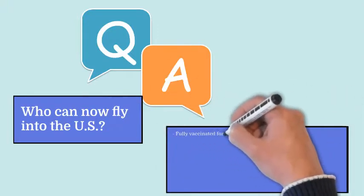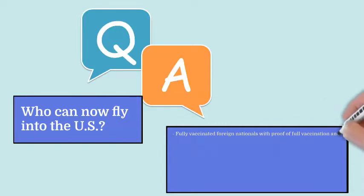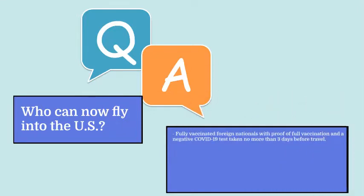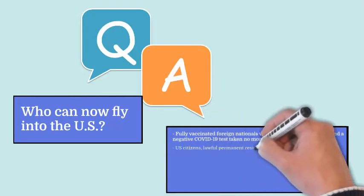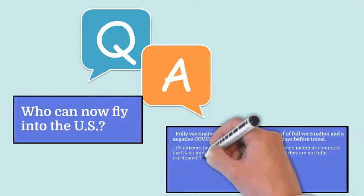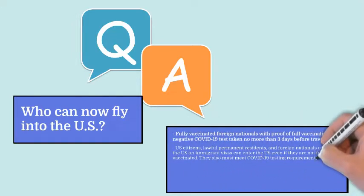Fully vaccinated foreign nationals can travel to the US by showing proof of full vaccination and a negative COVID-19 test taken no more than three days before travel. U.S. citizens, lawful permanent residents, and foreign nationals coming to the US on immigrant visas can enter the US even if they are not fully vaccinated.